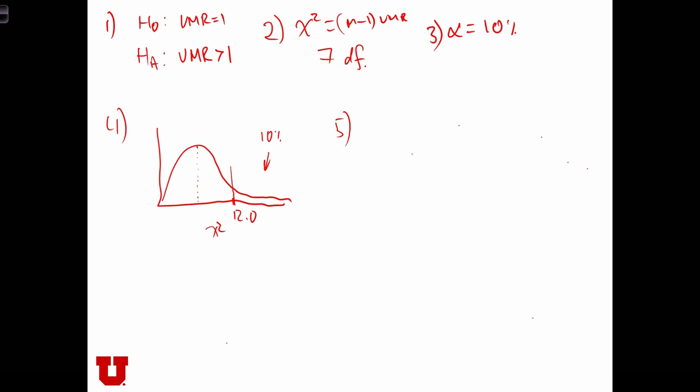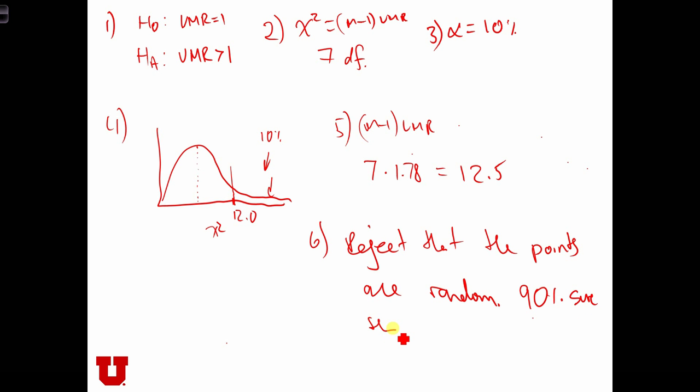And in step 5, we calculate chi-squared. So we've got m minus 1 times VMR, which equals 7 times 1.78, which is 12.5. So the critical value is in this right tail. So in step 6, we're going to reject that the points are random. And we can be 90% sure that mortgage foreclosures have a clustered pattern.